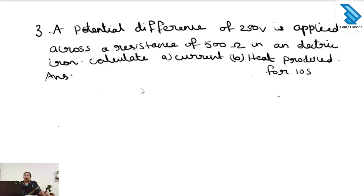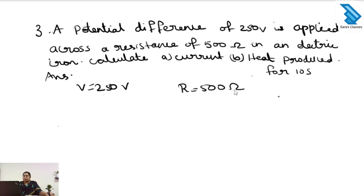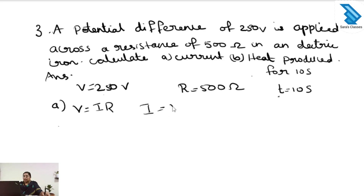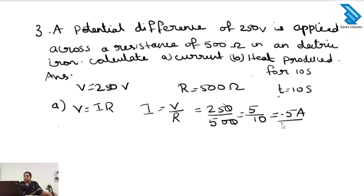Third question: a potential difference of 250 volt is applied across a resistance of 500 ohm in an electric circuit. Calculate the current and heat produced for 10 seconds. The voltage is given as 250 volt, the resistance is given as 500 ohm, and the time is given as 10 seconds. First we calculate the current. We know V equal to I into R, so I equal to V divided by R, which is 250 divided by 500, giving 0.5 ampere. The current produced in that conductor is 0.5 ampere.